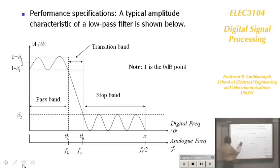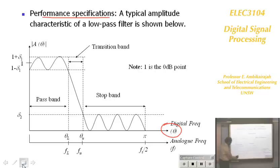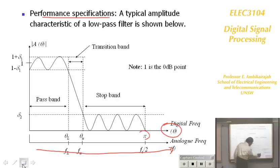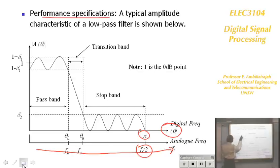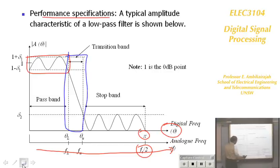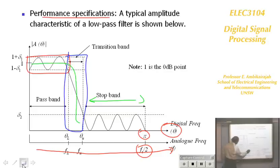Before we choose the filter, you need to know the performance specifications, which you've already looked at in Chapter 4 on analog filter design. For a digital filter, you can see the digital filter frequency and the analog frequency axis. Where you have digital frequency pi corresponds to half the sampling frequency. If you take a low-pass filter, you have a passband, then a transition band, then a stopband. If you want to make this filter very sharp, the order of the filter just increases.